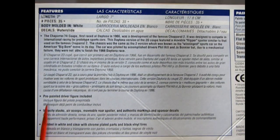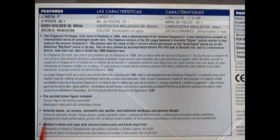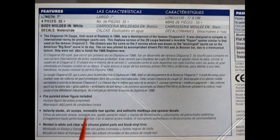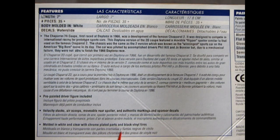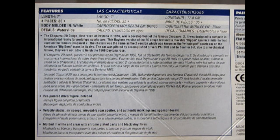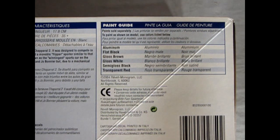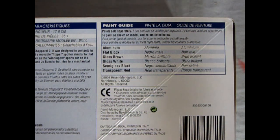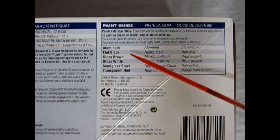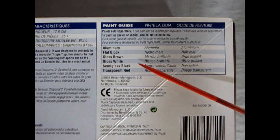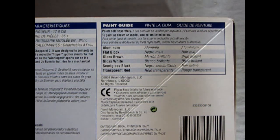And as you can see here it says pre-painted driver figure included, velocity stacks, air scoop, movable rear spoiler, and authentic markings and sponsored decals. Molded in white and clear with chrome plated parts and black vinyl tires. And over here we got a little paint call out. It says you need to get aluminum, flat black, gloss brown, gloss white, semi-gloss black, and transparent red.